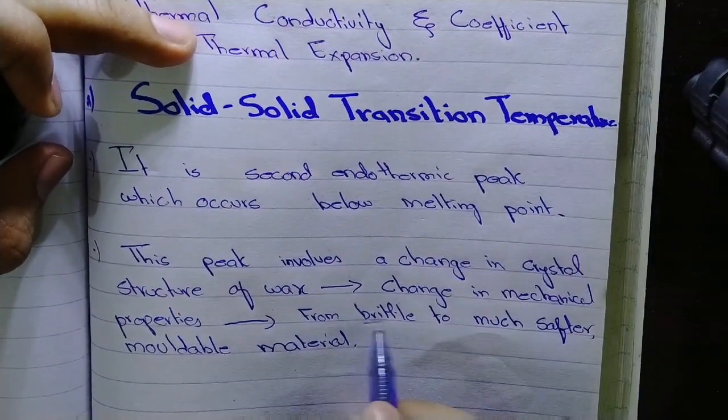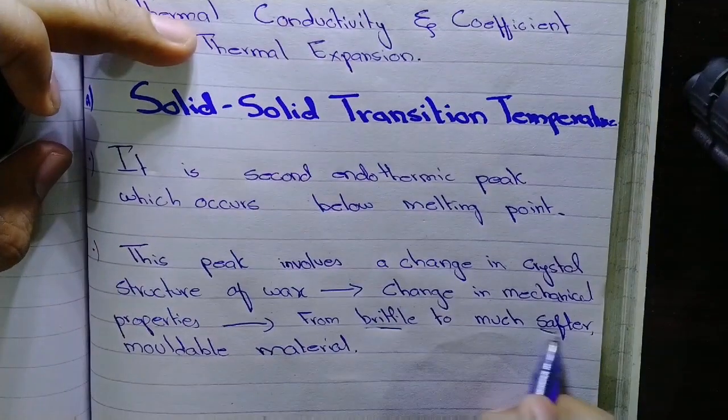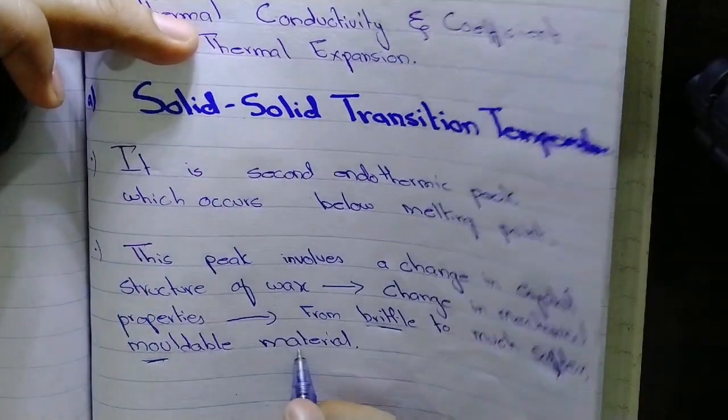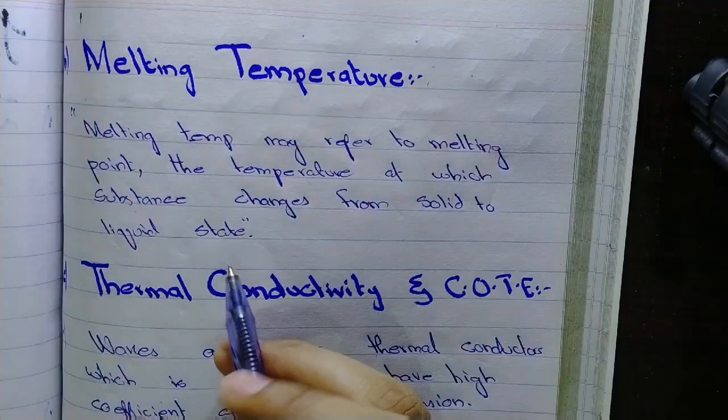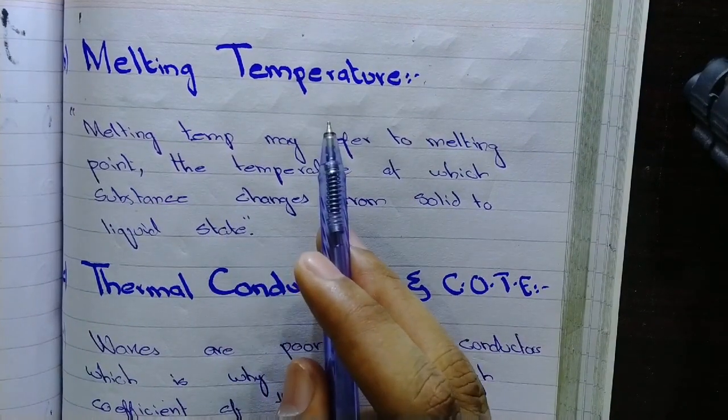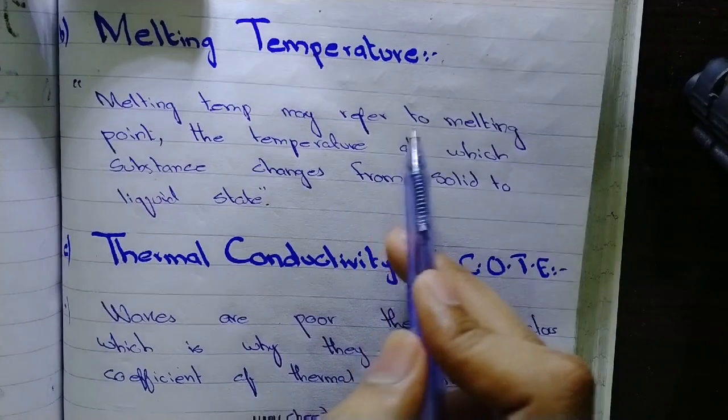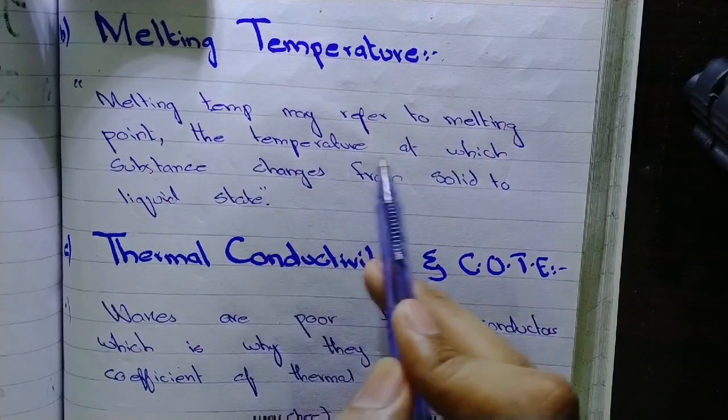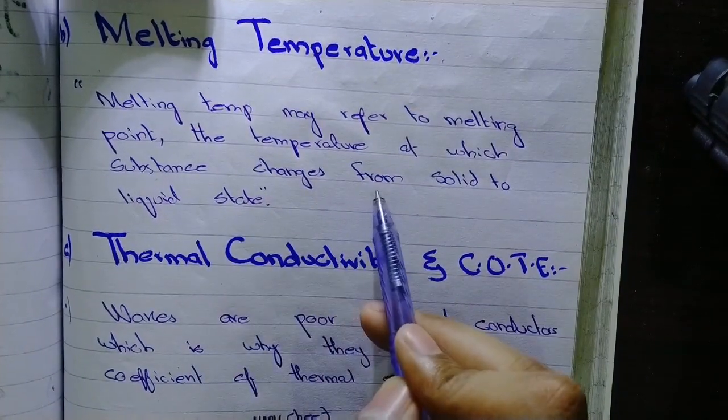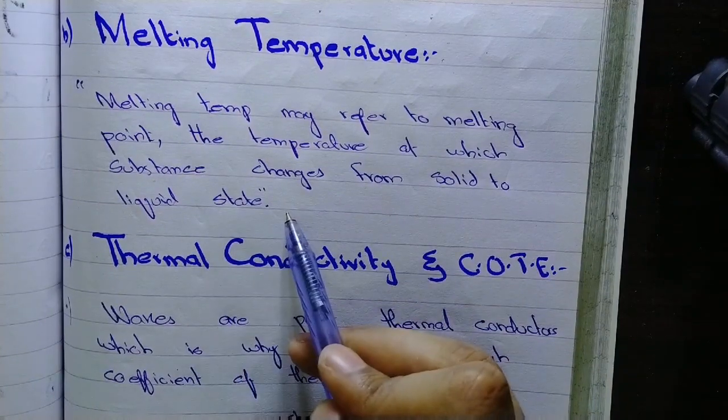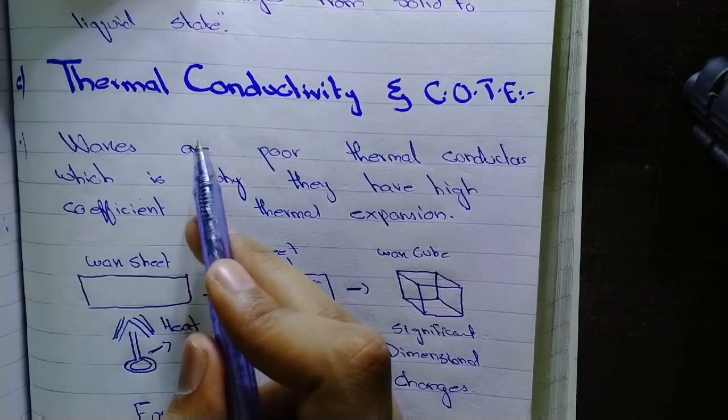Now what is melting temperature? As in basic chemistry, the melting temperature may refer to melting point, the temperature at which substance changes from solid to liquid state. Now the thermal conductivity and coefficient of thermal expansion...